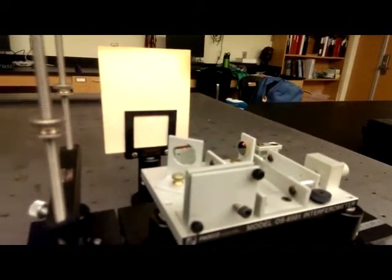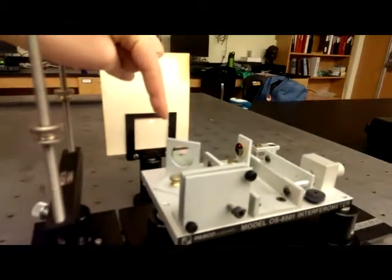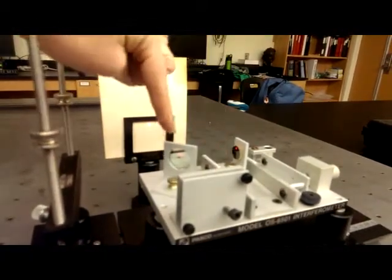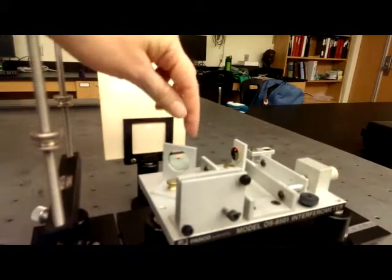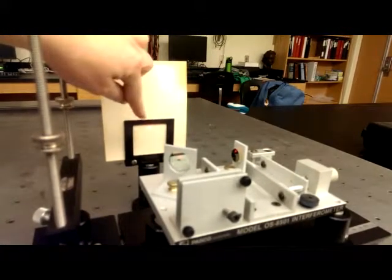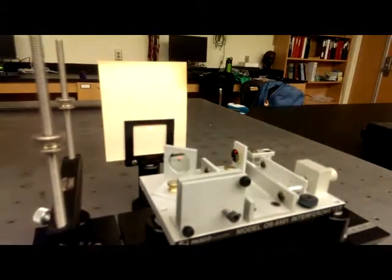Now what's happening is that your beam is hitting the beam splitter. Part of it's going to this mirror and bouncing back, part of it's going through, hitting this mirror, and bouncing back. So there's actually two beam paths creating a dot that's here on the cardboard.